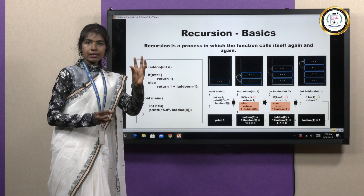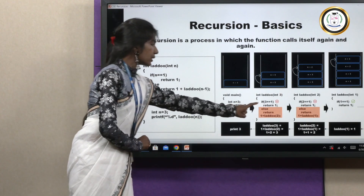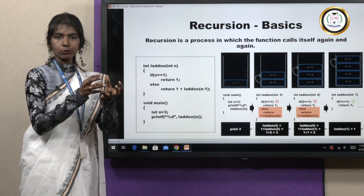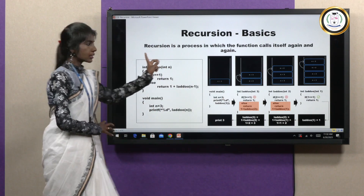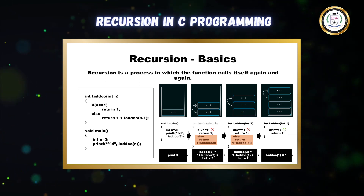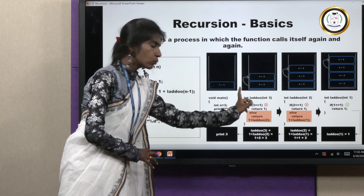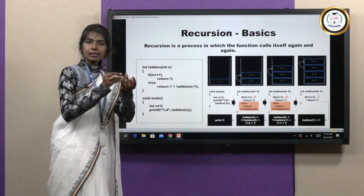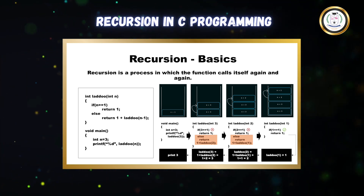Now n equal to 3 will be stored inside the stack, the main function will be paused, and the function will be called. We are going to execute the actual code. We can return the output only when all the laddu becomes boondis. We have a condition: when you have only one boondi, you can return as such. But when you have two or more boondis, you need to call your function again. My n value is 3, so it checks whether n equals 1 — it is not. So it goes to the else part and returns 1 plus laddu(n-1), which is 1 plus laddu(2).